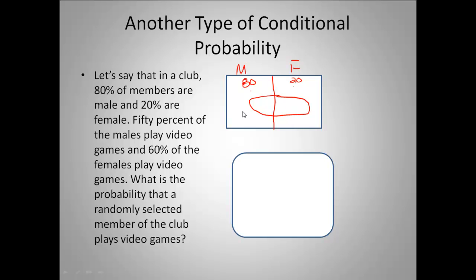This circle represents those that play video games. For the males, 50% of them play video games. If we let 80 represent the number of males in the club, then 80 times 0.5 gives us 40 — so there are 40 male members that play video games.